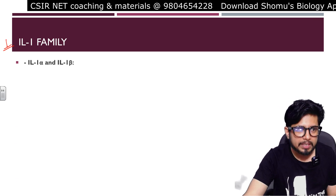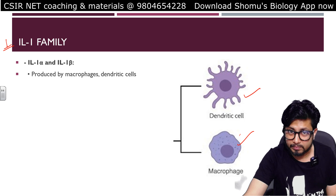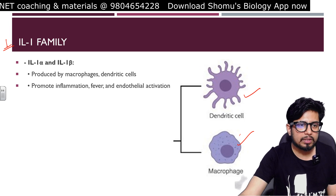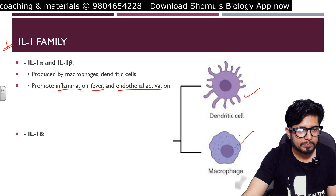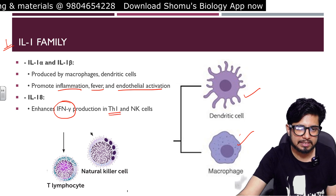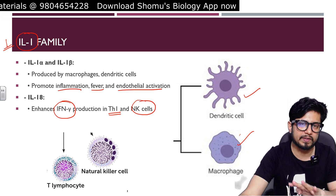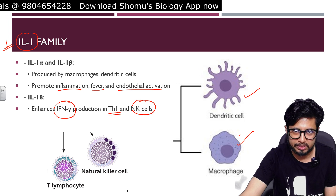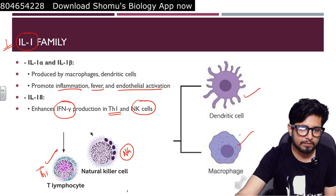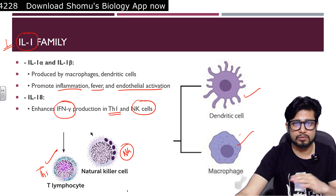Starting with the interleukin-1 family: IL-1α and IL-1β are produced by macrophages and dendritic cells. They promote inflammation, cause fever, and trigger endothelial activation. Interleukin-18 enhances interferon-gamma production in T helper 1 cells and natural killer cells. So the interleukin-1 family is connected to four different cell types: macrophages, dendritic cells, T helper 1 lymphocytes, and natural killer cells.